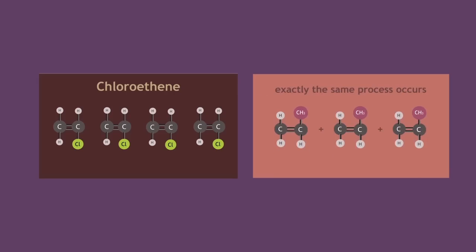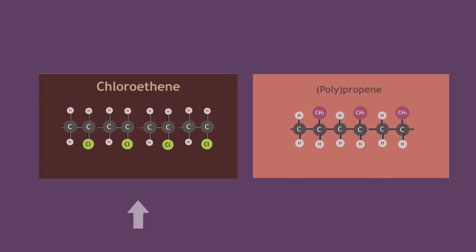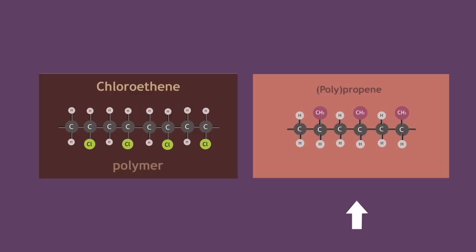Now, at the end of this video, you should be able to write an equation for both the formation of polychloroethene and the formation of polypropene, as well as name uses for both of these polymers.